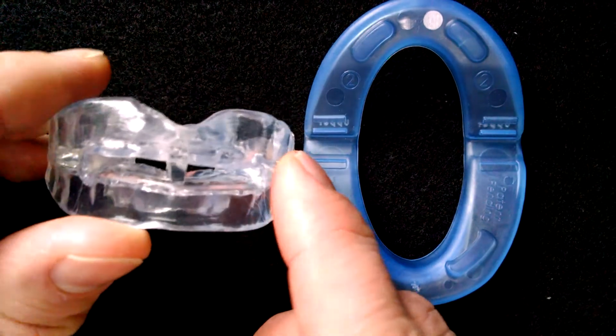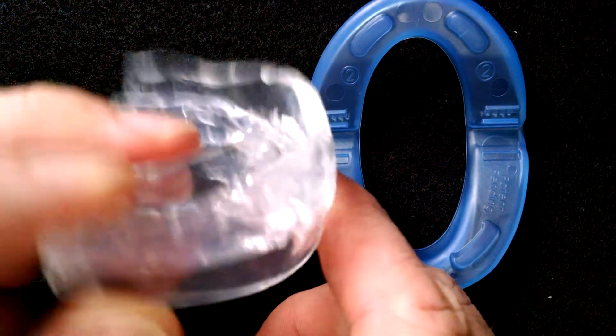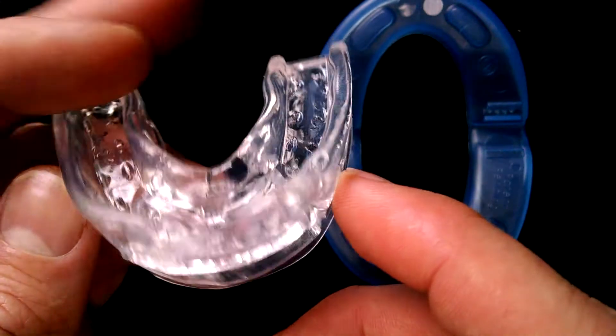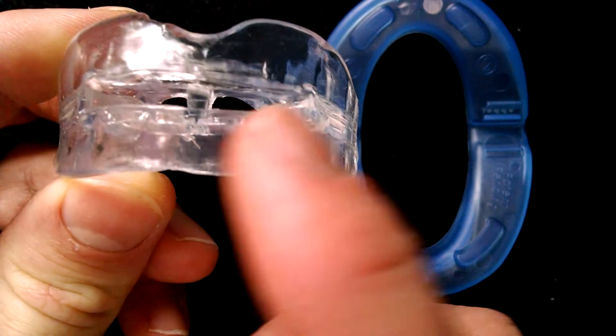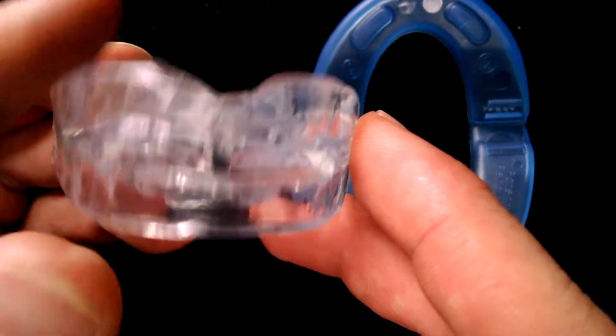The Rip Snore is also a mandibular advancement device but this is a simple boil and bite style. You can dunk it into warm water and then take an impression. This has a fairly large breather hole here at the front and the Rip Snore sells for $70 and that includes shipping.